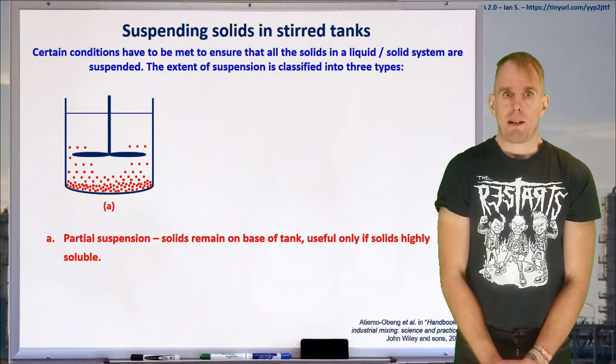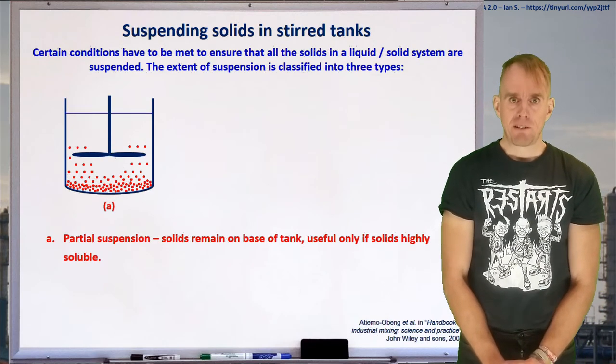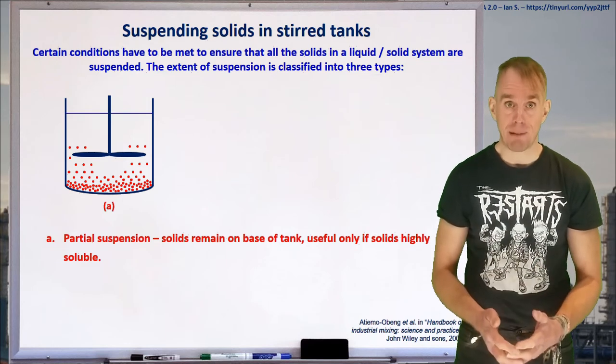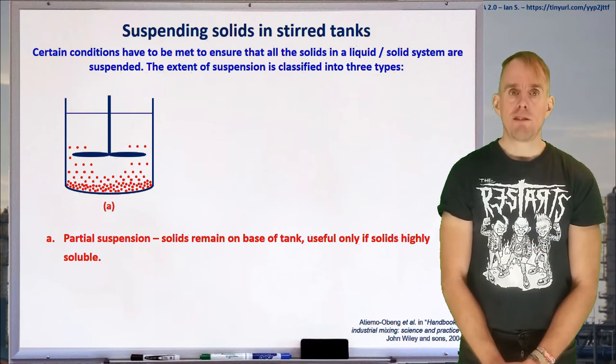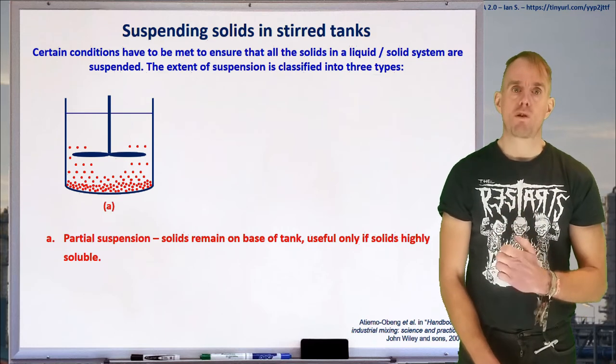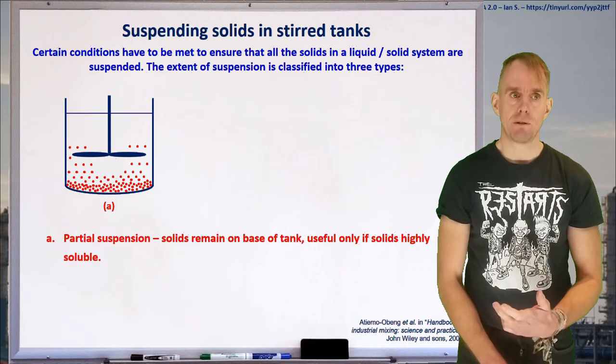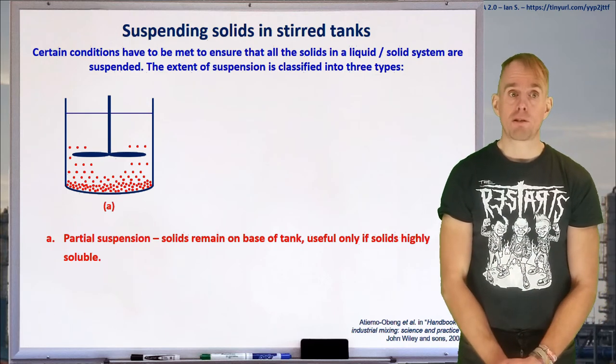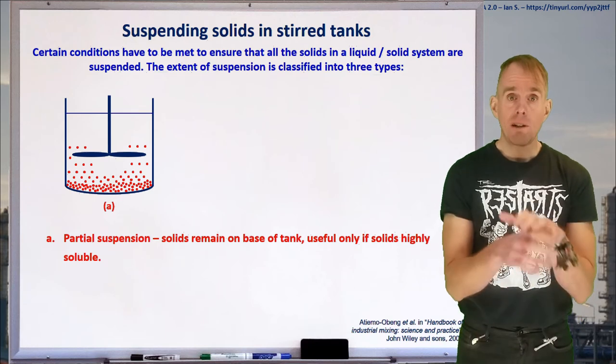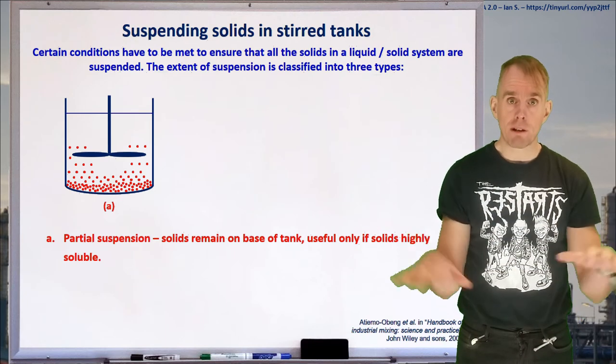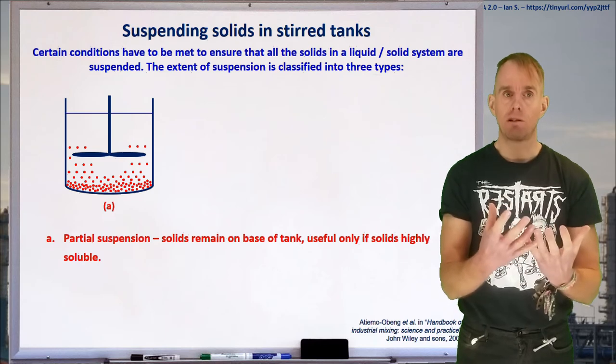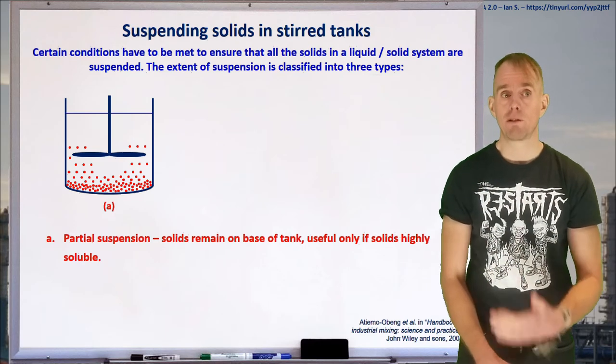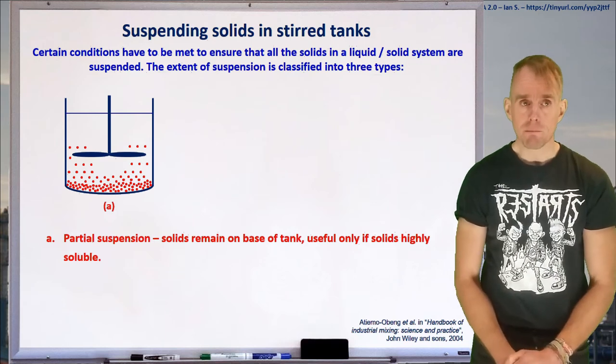Let's think now about keeping particles in suspension. We don't want a beach in our tank. That's bad. And so, what I'd like to do is introduce to you three suspension criteria that you'll commonly find to use. The first that I've put on the board here is called partial suspension. Here is where you have a layer of solids at the base of your tank and some particles in suspension. This typically is something that you don't want to do. It's only useful if the solids are very, very highly soluble.